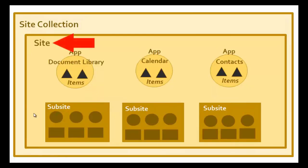The next level down from our site collection is our individual sites. When we create a site collection we need to create a top-level site, which is the root of our structure. Below that we start building our tree structure out with subsites. You don't have to create subsites or multiple apps, but if you want to you can — though best practice is always to keep it as flat as possible.